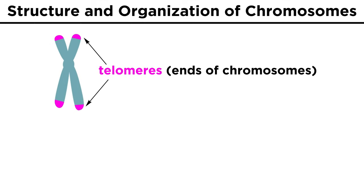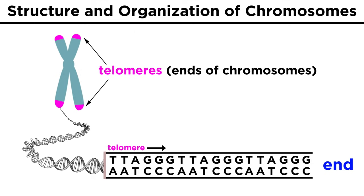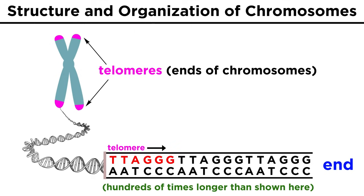These sections, called telomeres, are found at the ends of each chromosome, and they are sections of DNA where — in humans — the sequence TTAGGG is repeated hundreds of times.